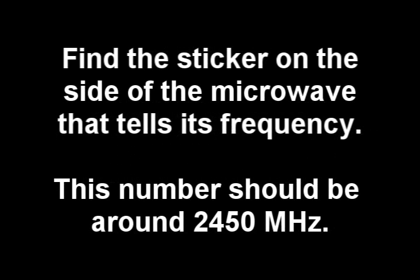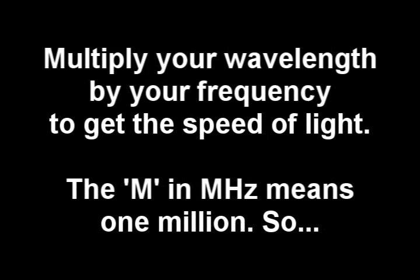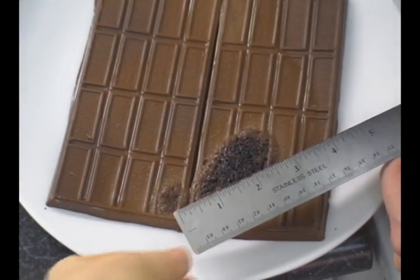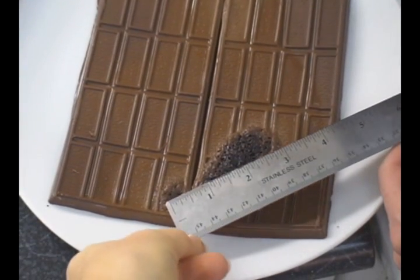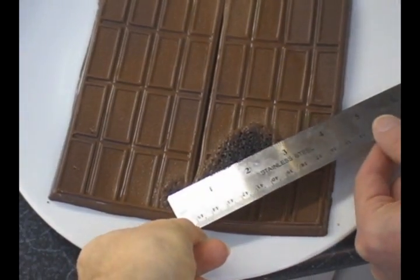Find the sticker on the inside of the microwave that tells you the frequency of the microwave. The number should be around 2450 megahertz. Multiply your wavelength by your frequency to get the speed of light. Don't forget that megahertz means one million, so whatever number you multiply by adds six zeros to the end of it.